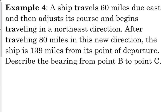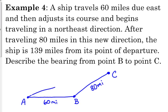So we start here. We travel 60 miles due east, and then it begins traveling in a northeast direction. So we end up over here. We traveled 80 miles in that direction. And the distance from its point of departure is now 139 miles. Whenever it's talking about distance, it's always going to be a straight line from point to point.